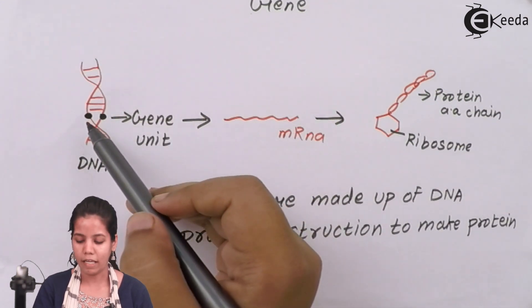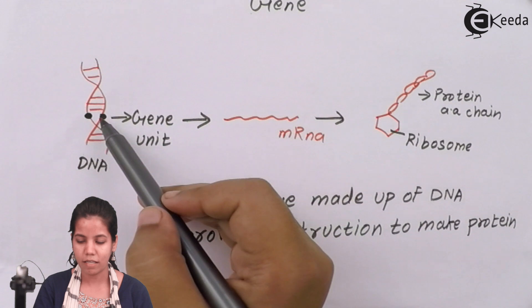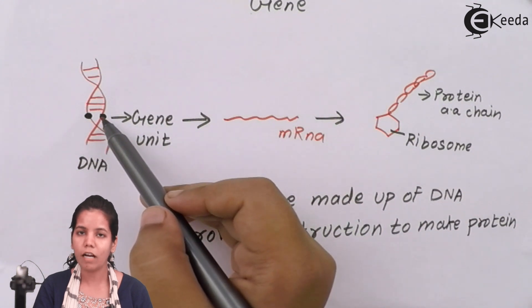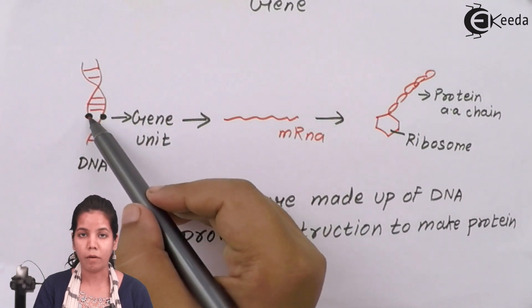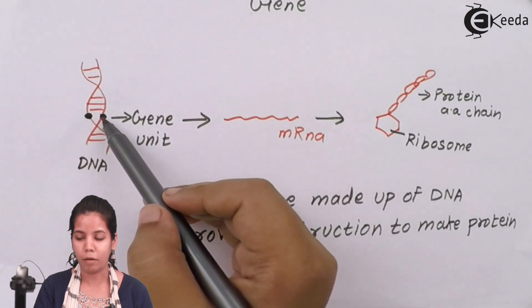On each strand of DNA there are pair of genes present and this pair of genes denote a character or a trait. One pair we get it from our father and another pair we get it from our mother.